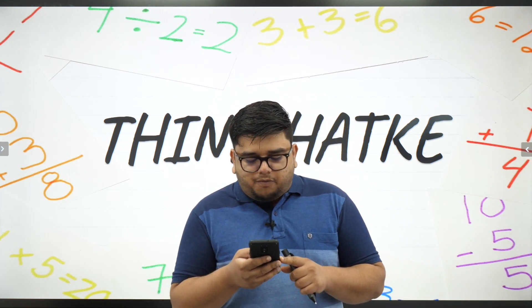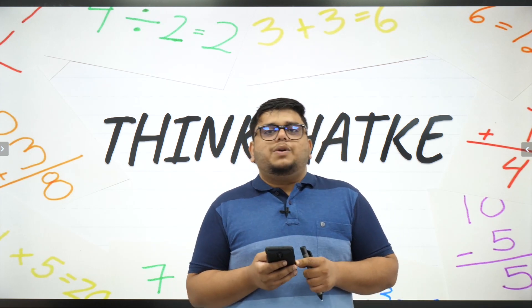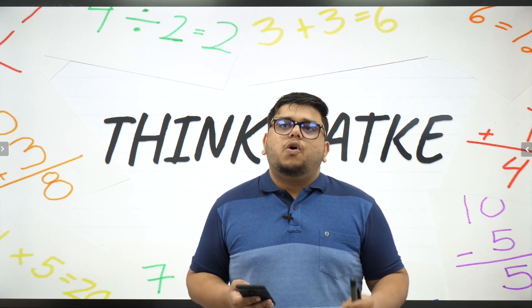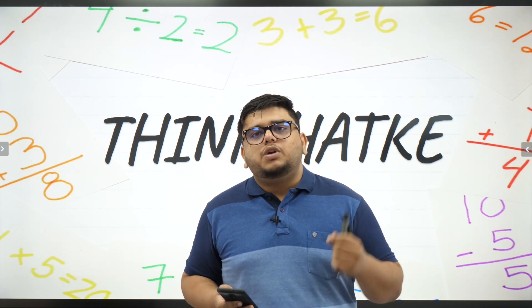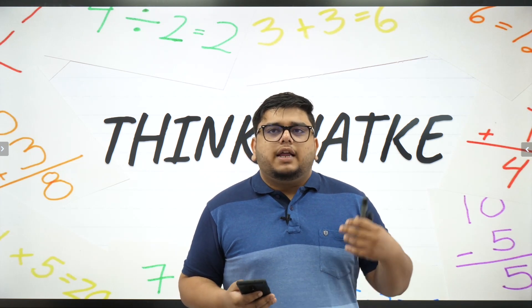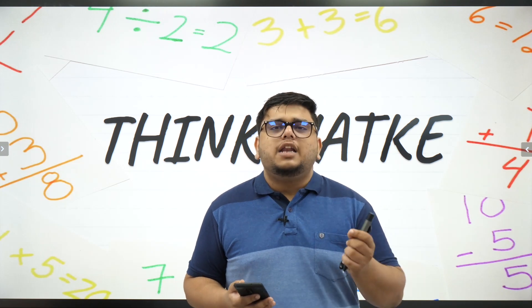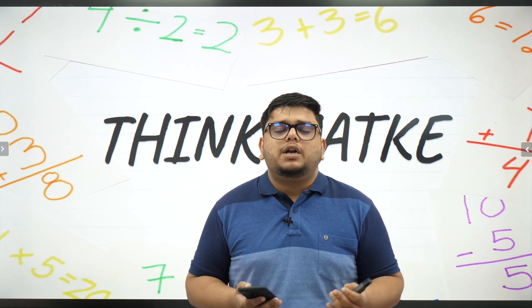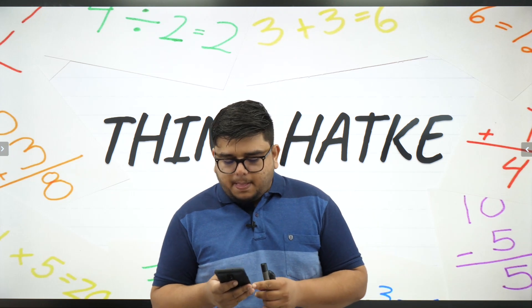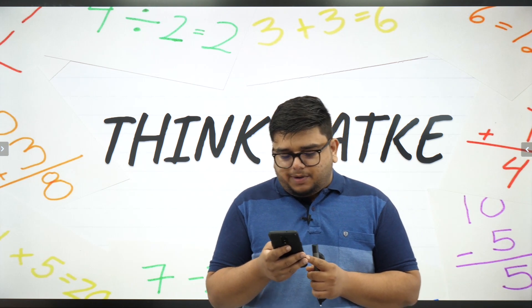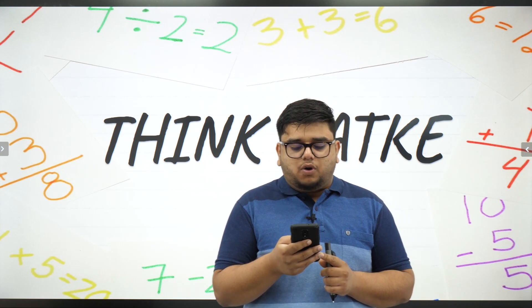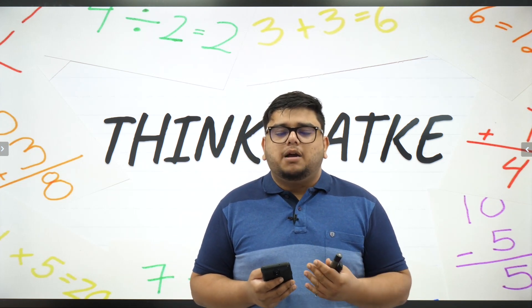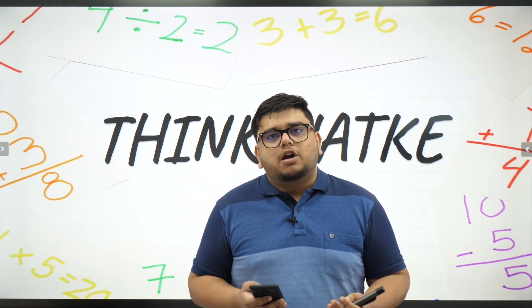Anubhav Kumar asks: sir, what is the marking scheme of RMO? RMO is a subjective exam — you get six questions and each question is worth 16 or 17 marks. You have to write every step; the person checking your paper should find the answer self-explanatory. Don't skip steps, because if you write it stepwise you'll get more marks. Anubhav also asks about the RMO cutoff for class 8 in North Bihar — I'm not sure of the exact number; please Google past year RMO cutoffs for different states.